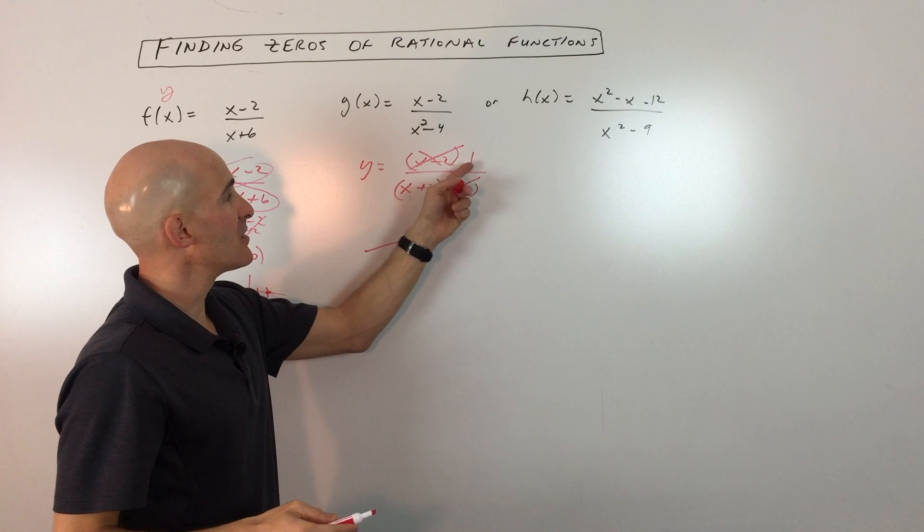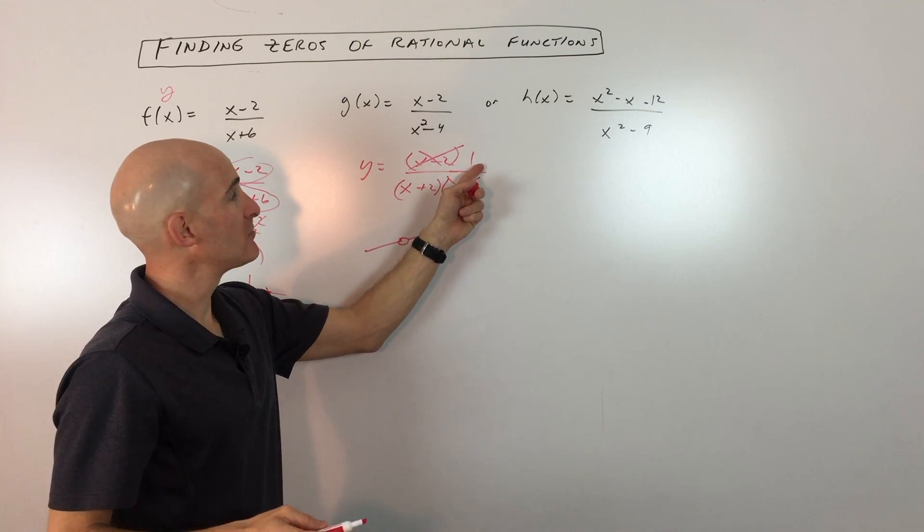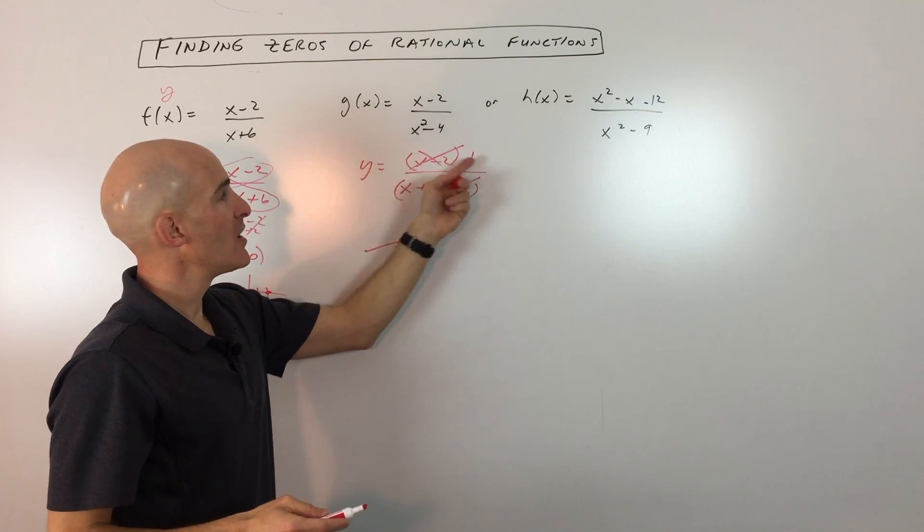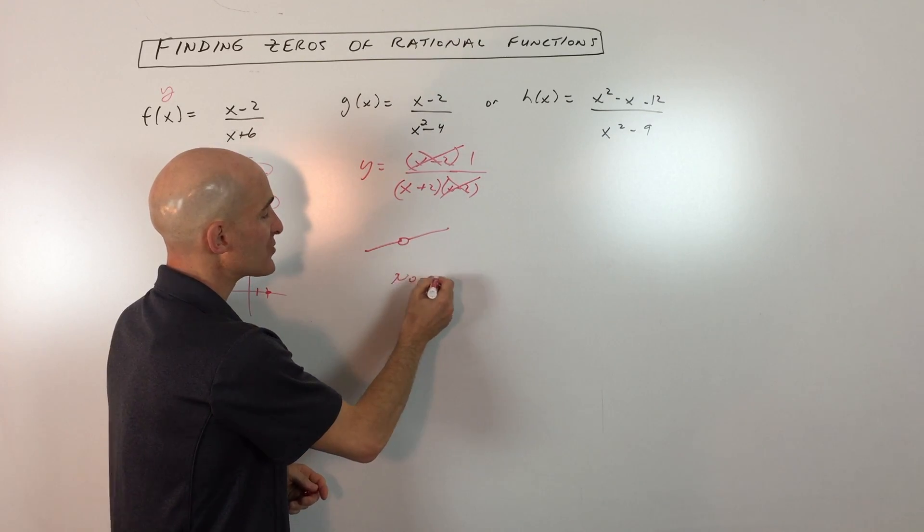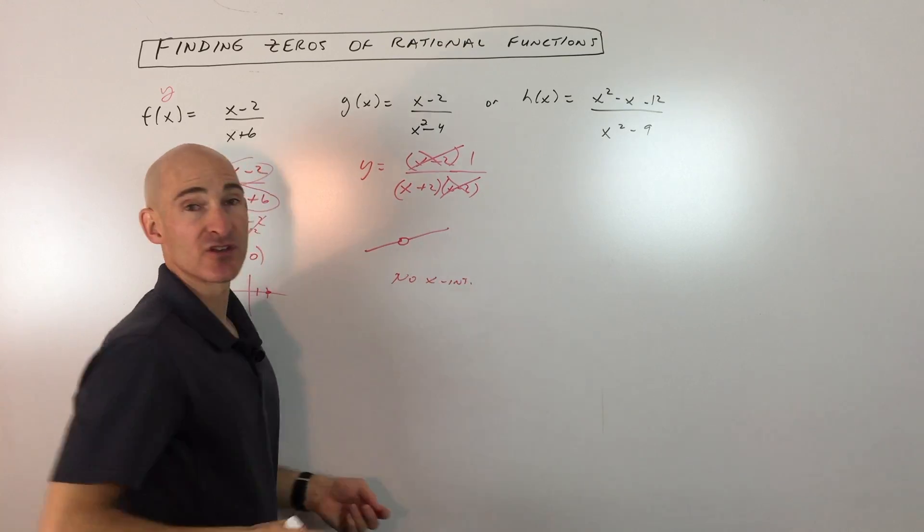So if you try to set the numerator to zero like we did in the previous example, you can't really set a constant to zero. So this means there's no zeros, there's no x-intercepts for this particular graph.